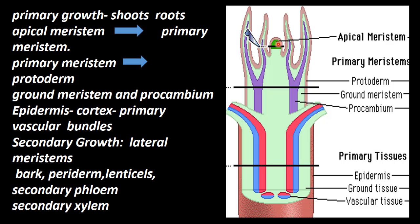To summarize: the primary meristome gives rise to three tissues. Protoderm gives rise to epidermis, ground meristome gives rise to cortex, and pro-cambium gives rise to xylem and phloem vascular structure. These are all the primary tissues — primary epidermis, ground tissue, and vascular structure.